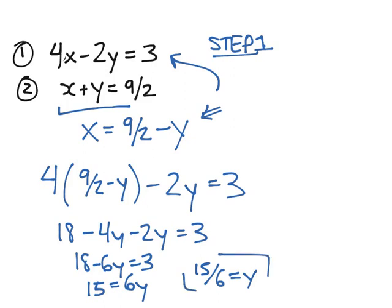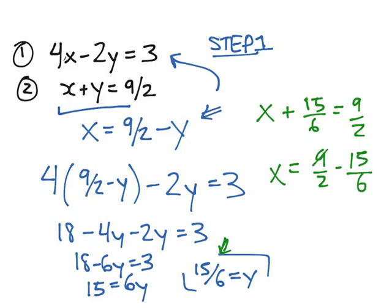And now, since we have y, we can solve for x by substituting y in, or substituting 15 over 6 in for y, in either of our two equations. So, we choose the easier one. That would be x plus y is equal to 9 over 2. x plus 15 over 6 is equal to 9 over 2. x is equal to 9 over 2 minus 15 over 6. So, that's 27 over 6 minus 15 over 6, which is equal to 12 over 6, which is equal to 2. So, xy is 2, 15 over 6.